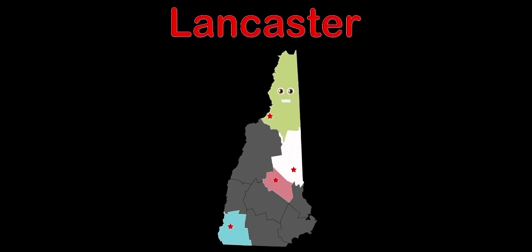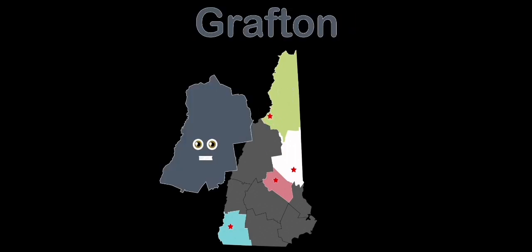Coos County makes up the northern part of New Hampshire. The county seat goes by the name of Lancaster. Grafton County is located in the middle of New Hampshire's western part.